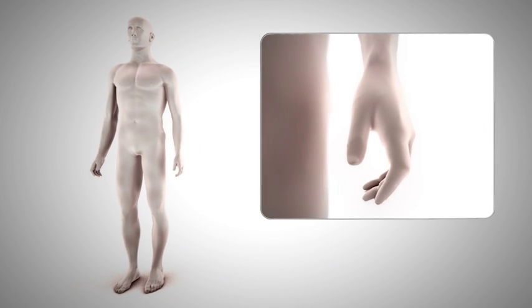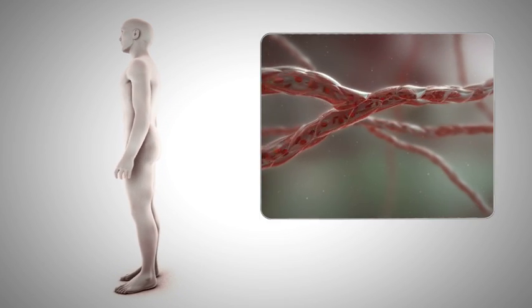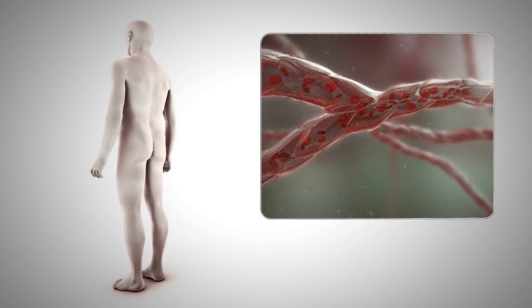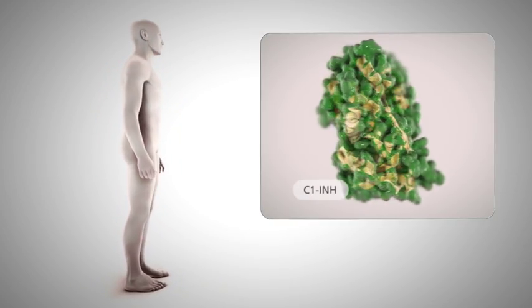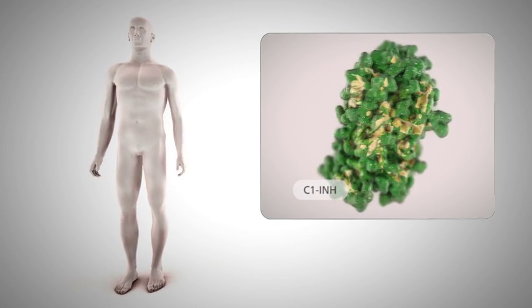Hereditary angioedema, or HAE, is a rare non-allergic form of angioedema, characterized by a deficiency of C1 esterase inhibitor, known as C1 inhibitor or C1 INH, and caused by mutations within the gene. HAE is generally hereditary.